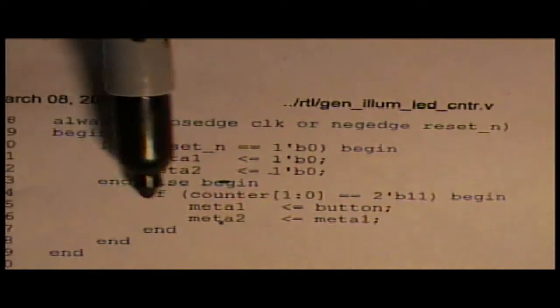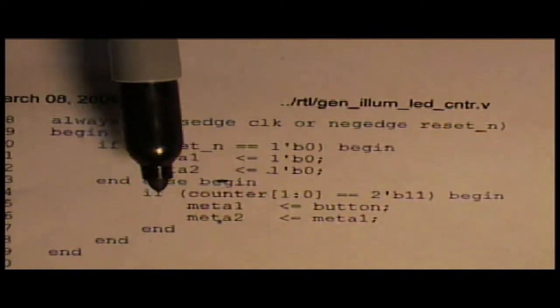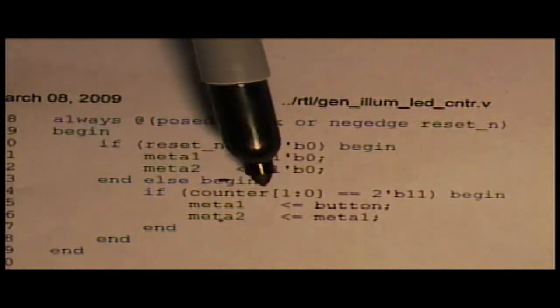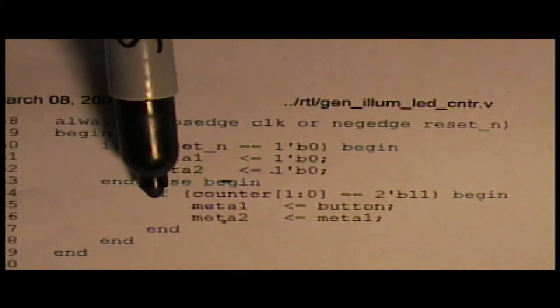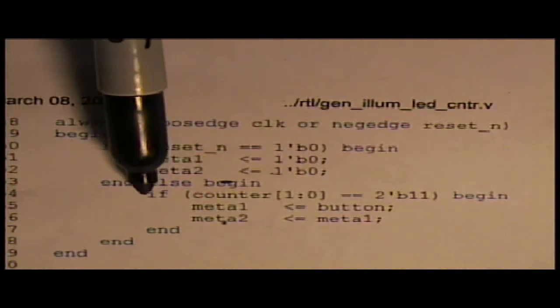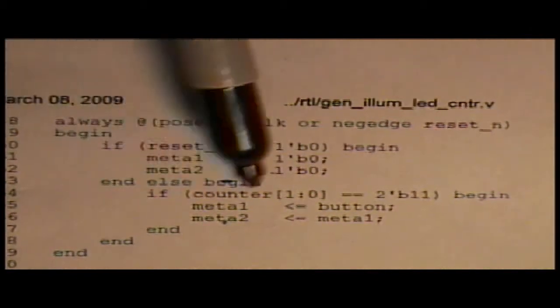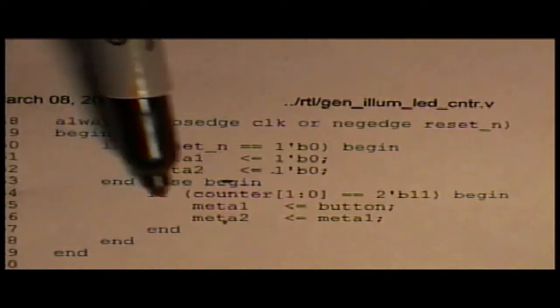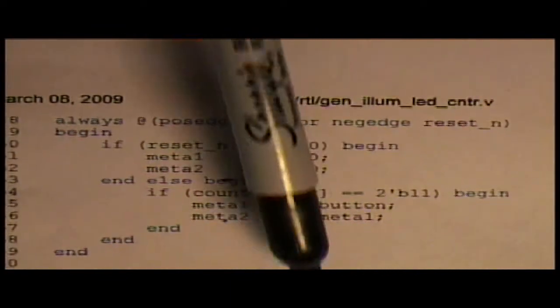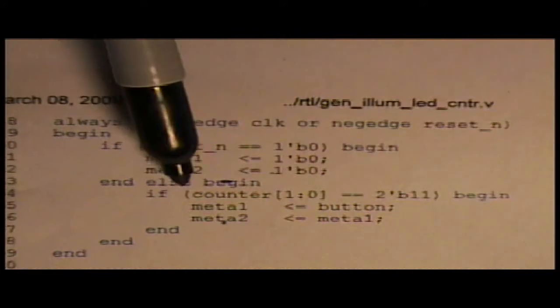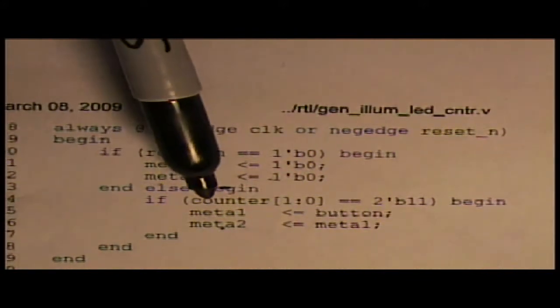So this else begin is the beginning of every clocked process. So every time the clock happens that's not being reset, it's going to evaluate everything underneath here. I have a counter that's free running elsewhere in the design.